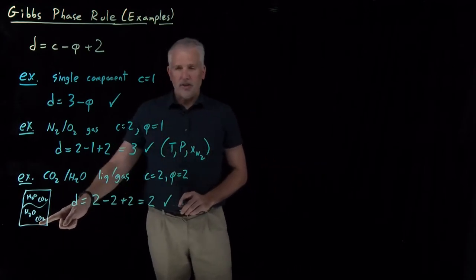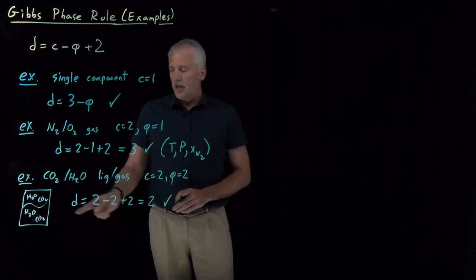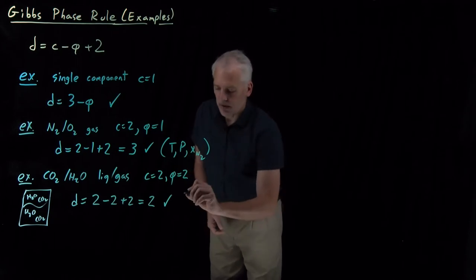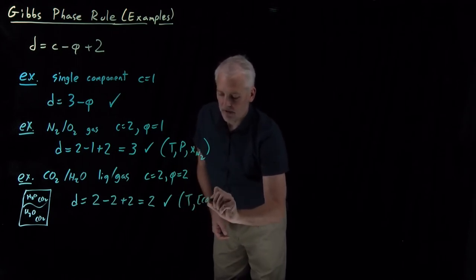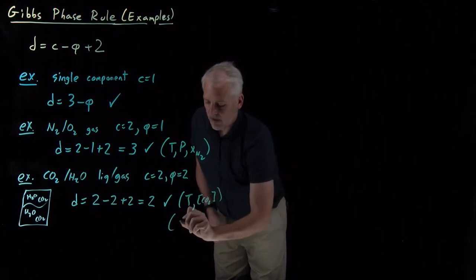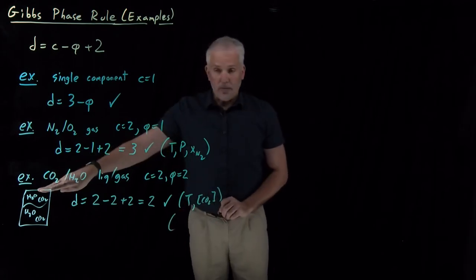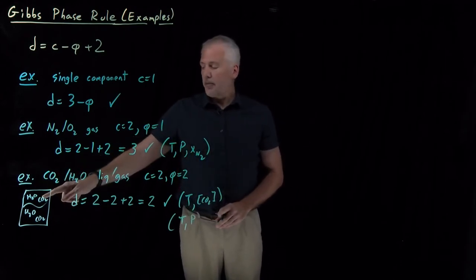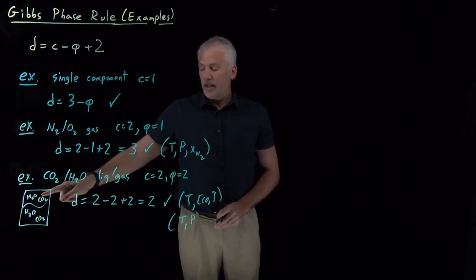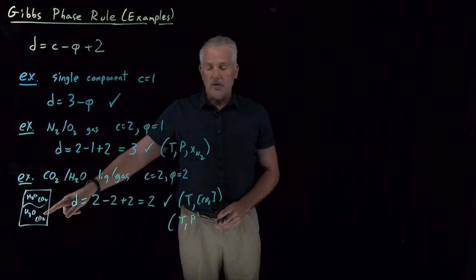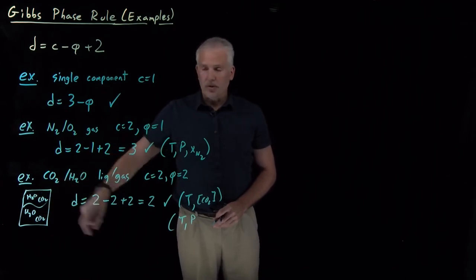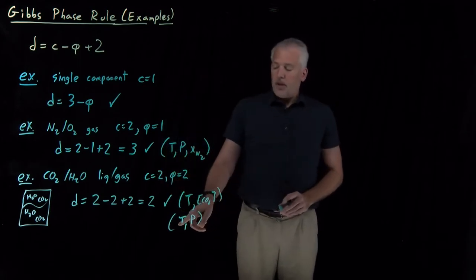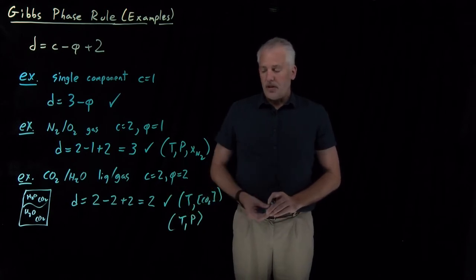So the number of degrees of freedom is two components minus two phases plus two, giving two. That matches what we found before: I can set the temperature and the concentration of CO2, but once I've determined the pressure, if the pressure in the vapor phase is higher than the vapor pressure of CO2 it will dissolve, and if it's higher than the vapor pressure of H2O it will condense. So I can choose two variables, and the others will be determined.